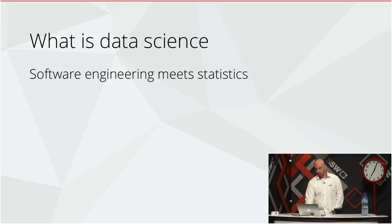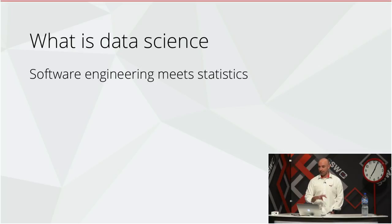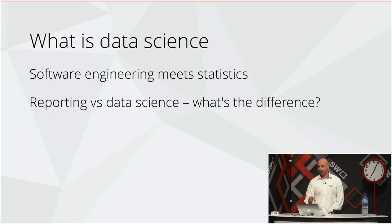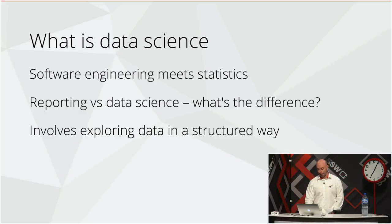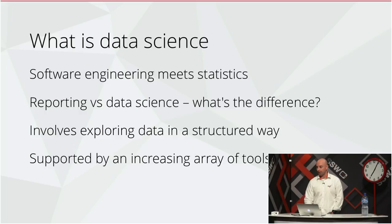So what is data science? One really good definition is it's software engineering meets statistics. A data scientist will typically know a lot more about software engineering than a statistician, and a lot more about statistics than a software engineer — it's a hybrid between the two worlds. Reporting is once you know the answer and it's just making that data available on an ongoing basis. The tooling in this space is absolutely incredible and grows every day.